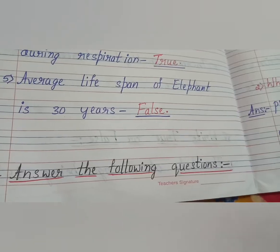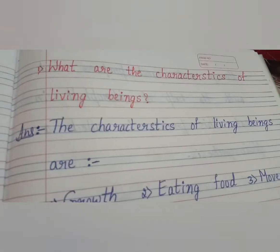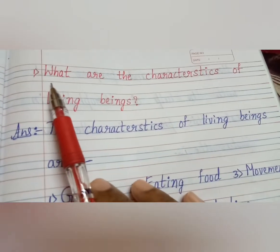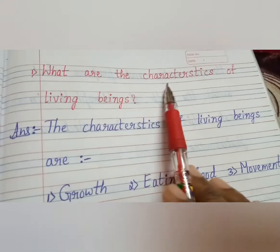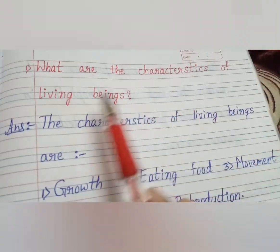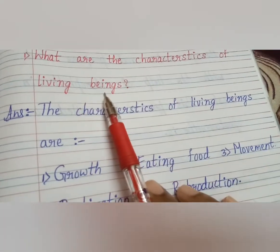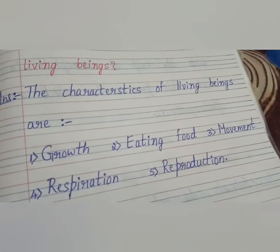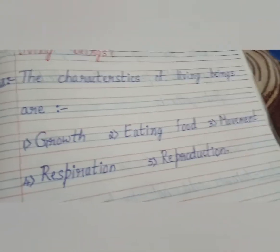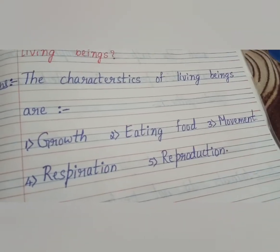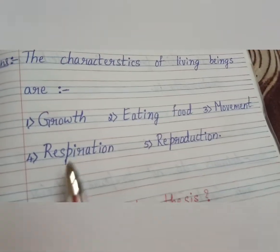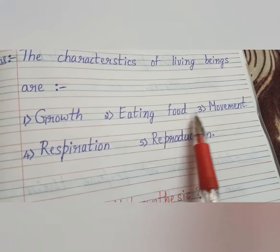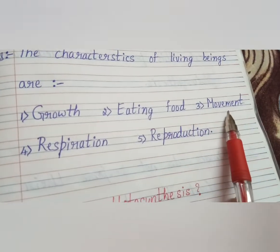Fifth main: answer the following questions. First question: what are the characteristics of living beings? The characteristics of living beings are: growth, eating food, movement, respiration, and reproduction.